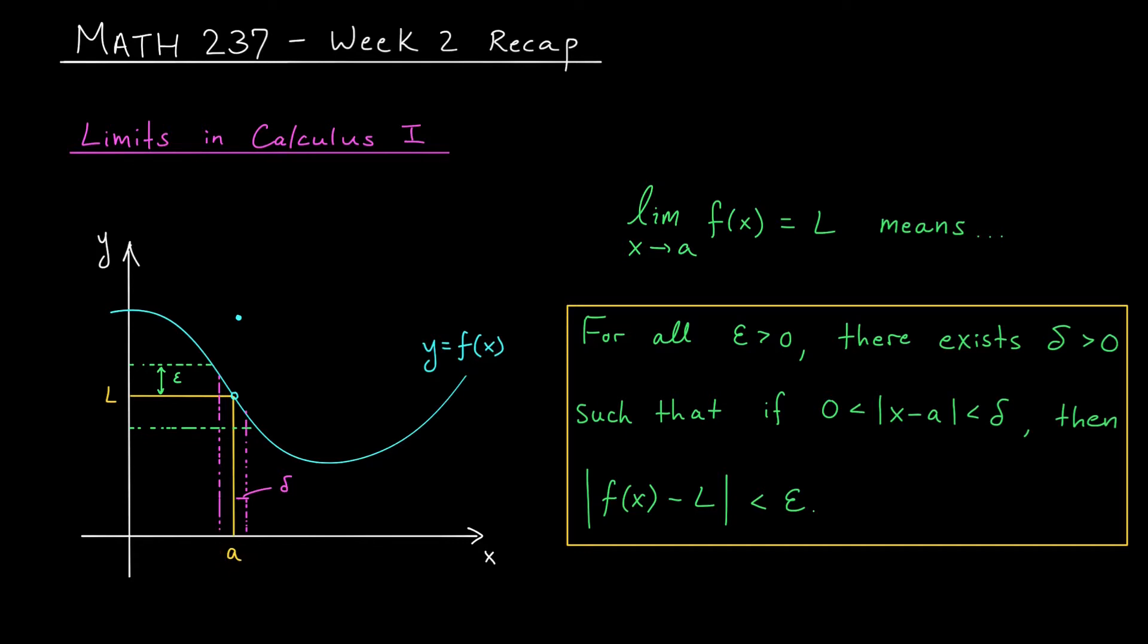If we want our outputs to be no further than, say, epsilon units away from L, and you can take any epsilon you want here, we should be able to achieve this by restricting our attention to inputs that are within some really tiny interval around x equals a, but not including x equals a itself. The function might be doing something totally different at x equals a, or it might not even be defined at this point. That's okay. The limit just cares about what's going on as we approach x equals a.